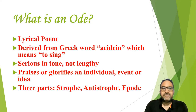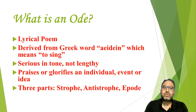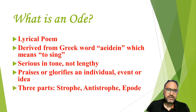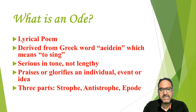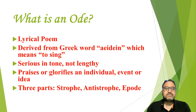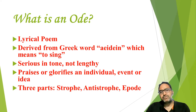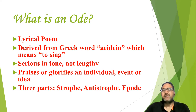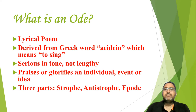An Ode is serious in tone and not lengthy. What a poet does in an Ode is praise or glorify an event. The poet addresses somebody or something — animate or inanimate — and praises that person, thing, or even an event. As written in the PowerPoint, an Ode praises or glorifies an individual, an event, or an idea. In our Ode, which we are going to discuss, the season of autumn is being praised by John Keats.